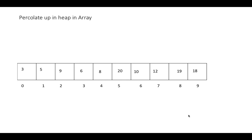Now we add a new element at the last index of the array. We need to see whether after adding this new element, the array still satisfies the min heap property. So we need to check its parent. We already have a formula that is (i-1)/2, which always gives the parent position of that particular newly added element.